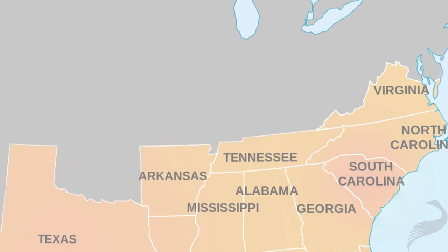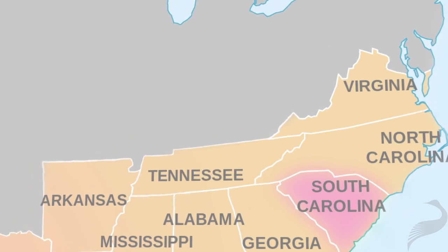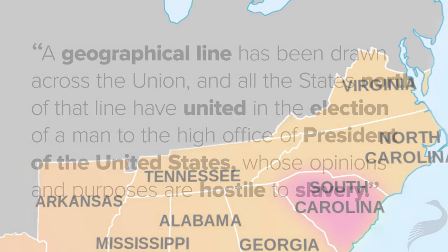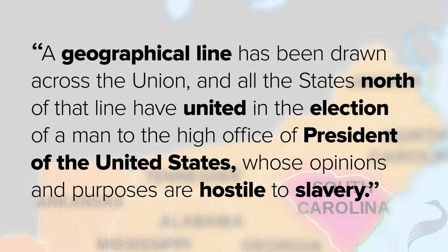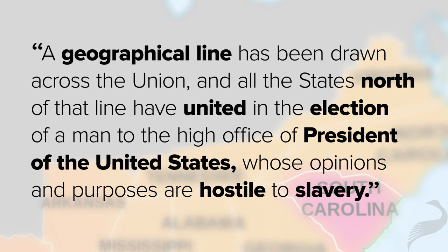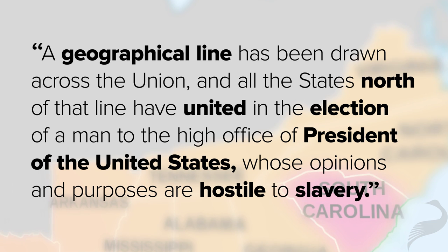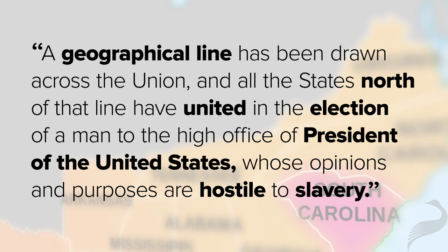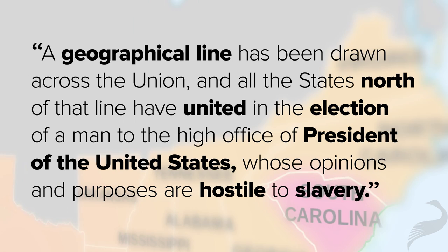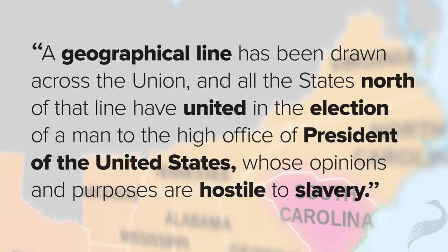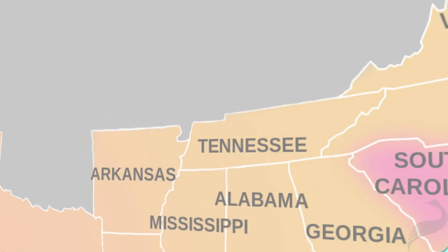This is what they had to say. South Carolina: 'A geographical line has been drawn across the Union, and all the states north of that line have united in the election of a man to the high office of President of the United States whose opinions and purposes are hostile to slavery.' That's the reason they left — because they lost an election.